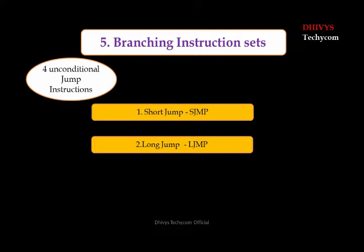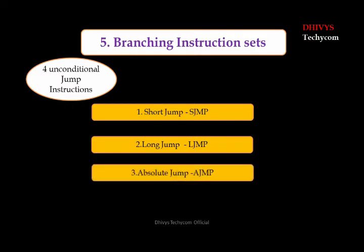The second one is long jump. In long jump, it will be a 3-byte instruction working on a 16-bit address. The next instruction set can be called anywhere in the program. In the 8051, we have 64 kilobytes of memory, and you can call anywhere in the 64 kilobytes of program memory — that is about long jump.